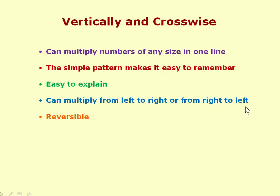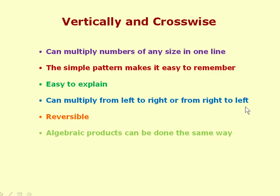The method is reversible, so the same approach used for multiplication simply reverses for division. Everyone knows division is the opposite of multiplication, but that's not obvious from the conventional system — which has an unwieldy multiplication method and an even worse long division method with no visible connection between them. In the Vedic system you see how beautifully connected they are, and divisions are of course done in one line.